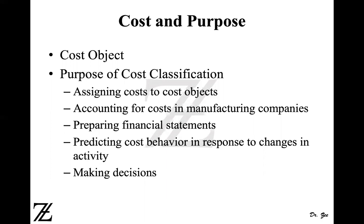A cost object is anything you're trying to associate a cost with, or anything you're trying to find out the cost of. So if you're trying to find out the cost of a pen, a pen is a cost object. A laptop is a cost object. The manufacturing plant, a supervisor, a department, a particular product, a service like an oil change, or even hiring a president — all of these are cost objects.